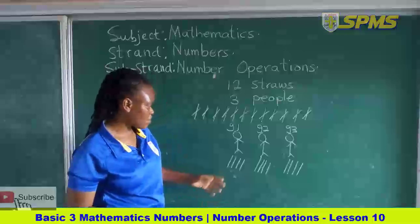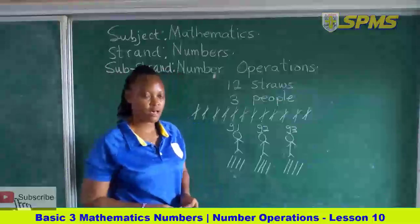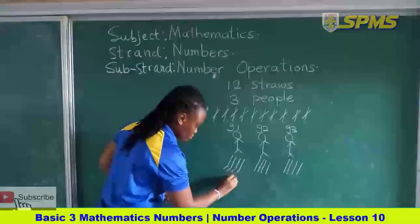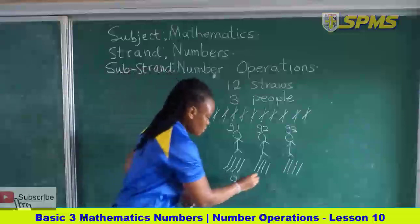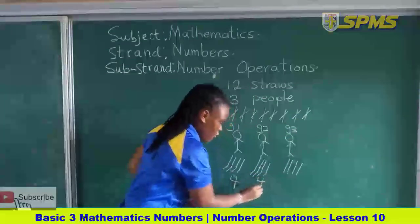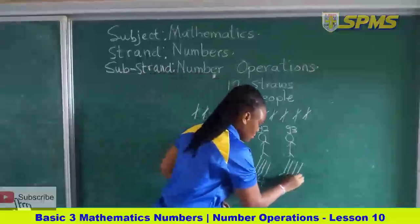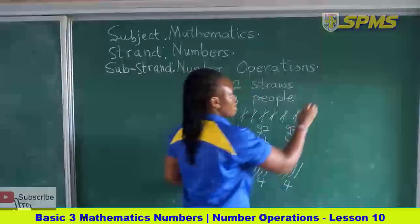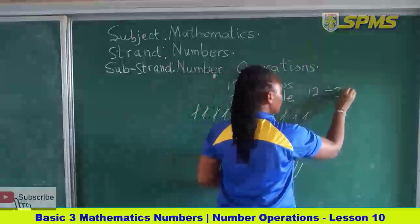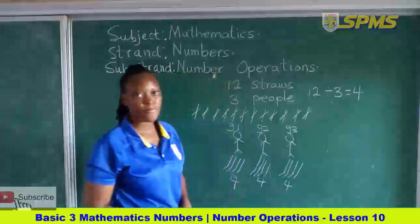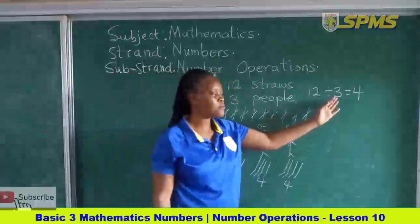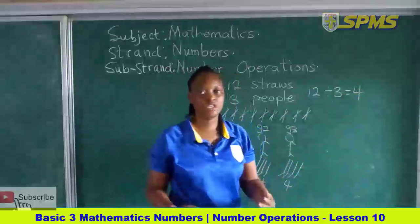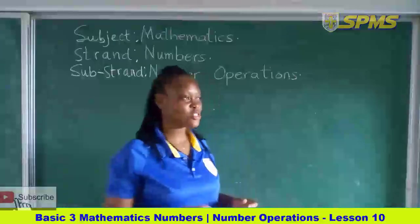Let us count the number of strokes each member has. The first person has one, two, three, four — four strokes. The second person has one, two, three, four — four. The third person has one, two, three, four — four. So they all have equal strokes. Therefore, twelve divided by three gives us four. It means that when three people are sharing twelve items, they will each get four.